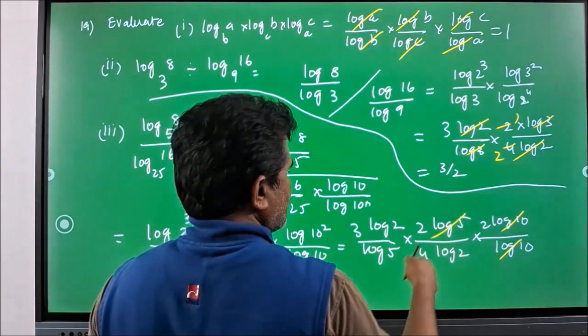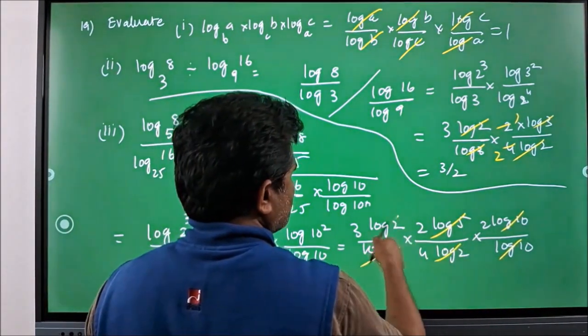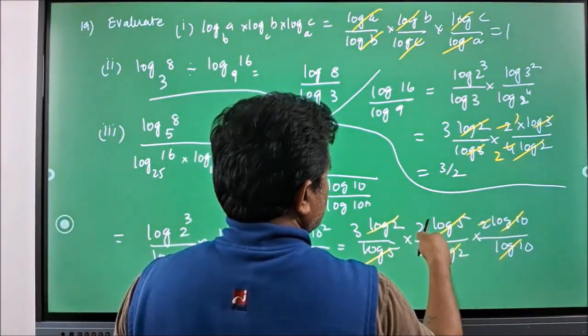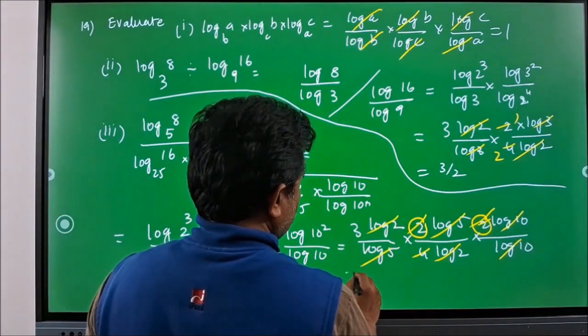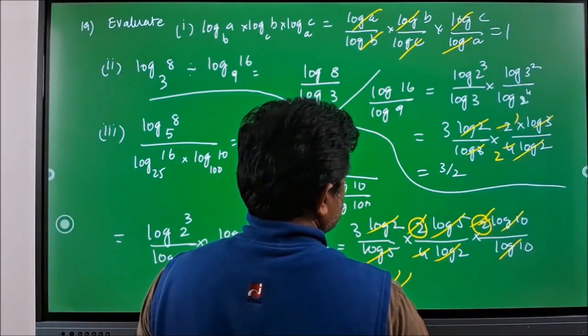Log 10 log 10 gets cancelled, log 5 log 5 gets cancelled, log 2 log 2 gets cancelled. 2, 2, 2s are 4 and these 2 will get cancelled with 4. What you will have? You will have 3 at last.